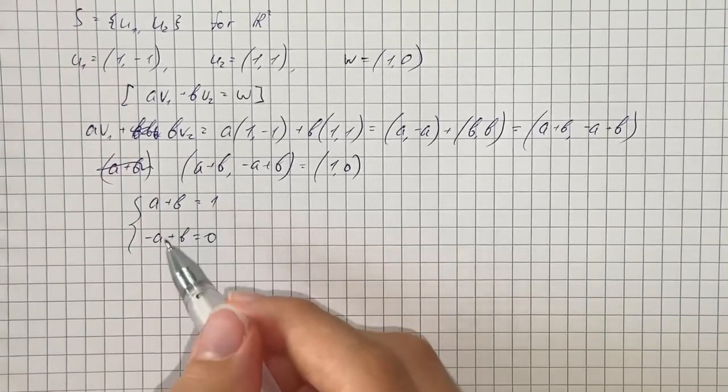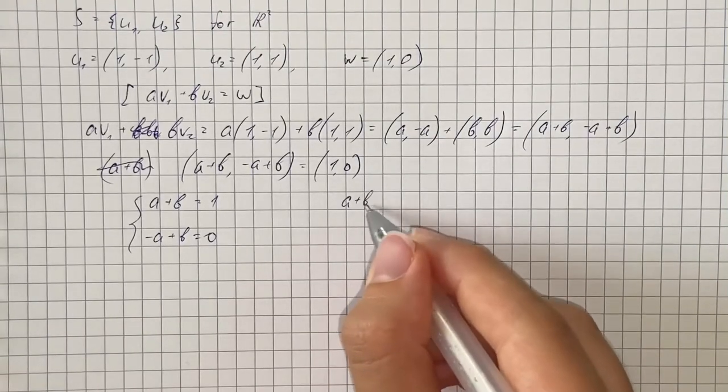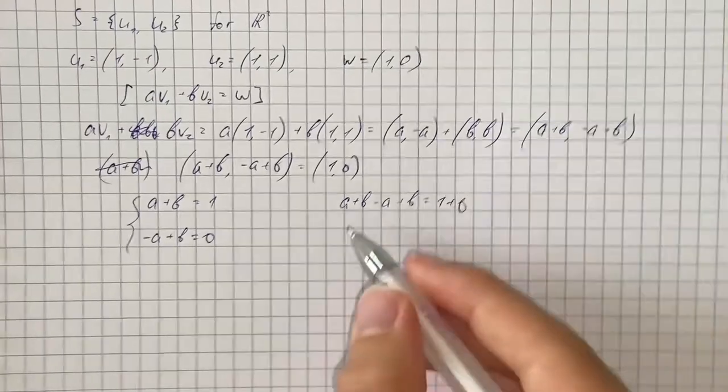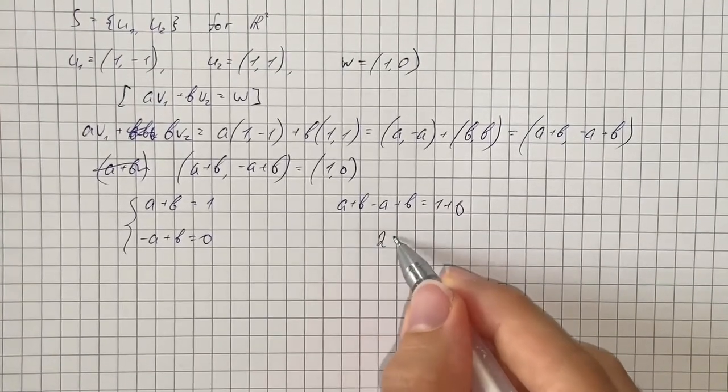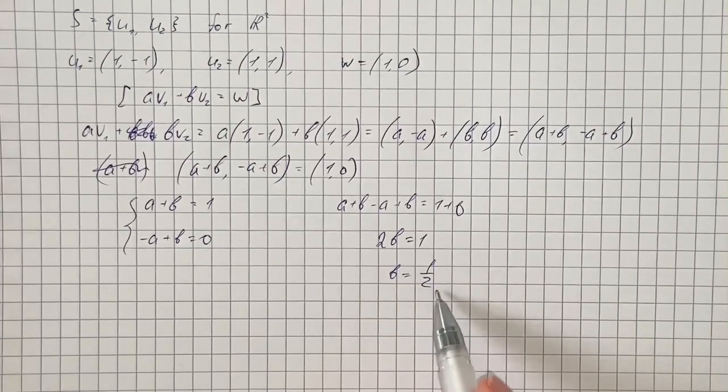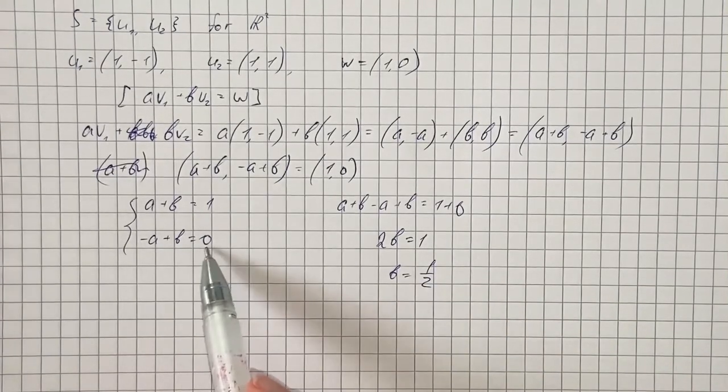So if we add them we get that A plus B minus A plus B equals 1 plus 0 which gives us 2B equals 1 and B equals 1 half.